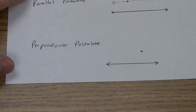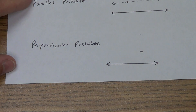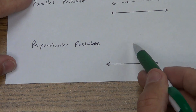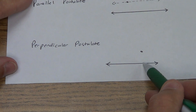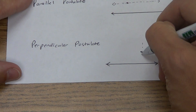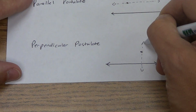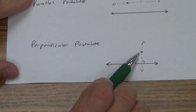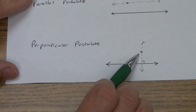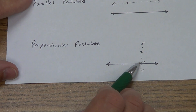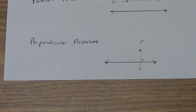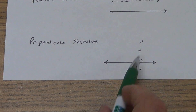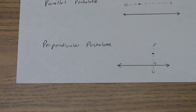The perpendicular postulate says almost the exact same thing, but we're talking perpendicular instead. So once again, we've got all kinds of lines that can go through this point. But of all those different lines, how many of them would be perpendicular to this one down here? Hopefully you'd understand there's only one. So the perpendicular postulate says: if there is a line and a point not on that line, then there is exactly one line through that point that is perpendicular to the first line.